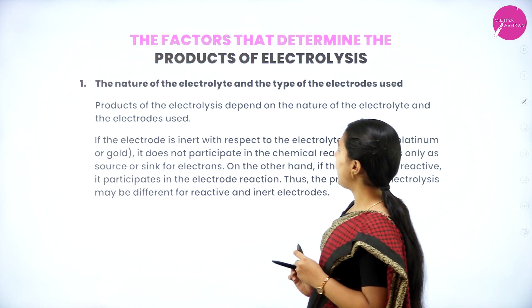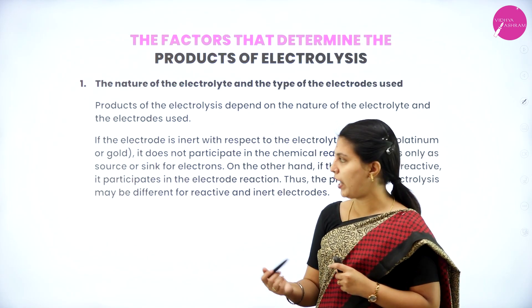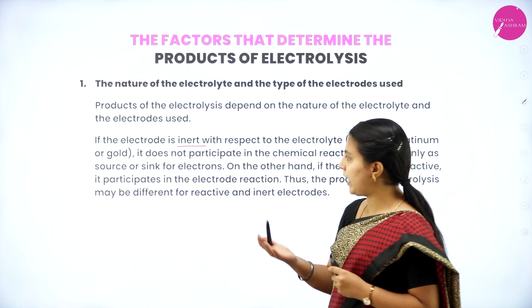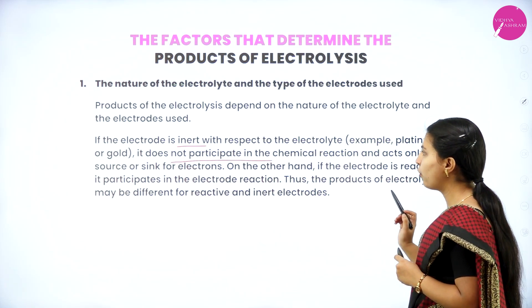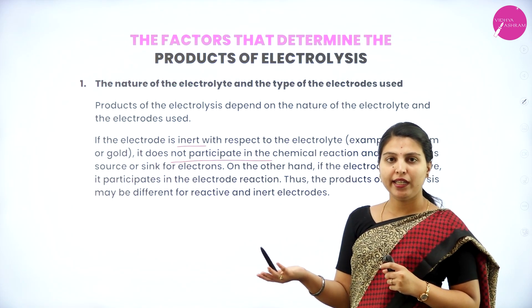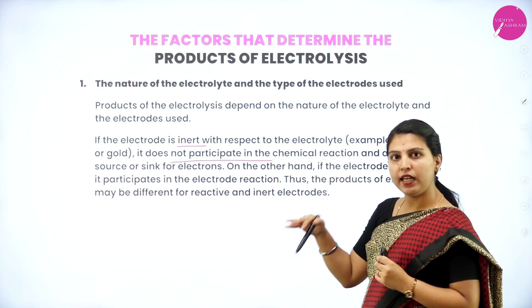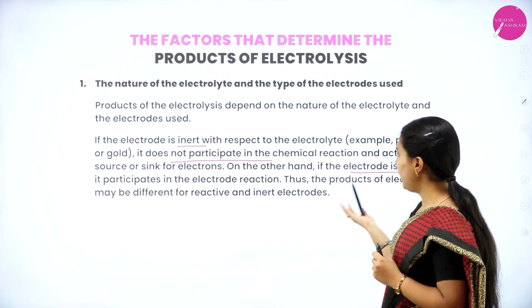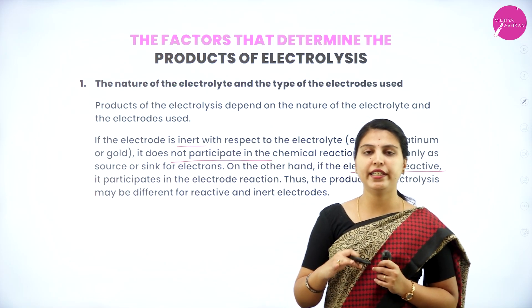Factor 1: The nature of the electrolyte and the type of electrodes used. Products of electrolysis depend on the nature of the electrolyte and type of electrode used. If the electrode is inert with respect to the electrolyte — inert means completely non-reactive — it does not participate in the chemical reaction and acts only as a source or sink of electrons. But if the electrode is reactive, it participates in the electrolyte reaction. Thus, the products of electrolysis may be different for reactive versus non-reactive electrodes.